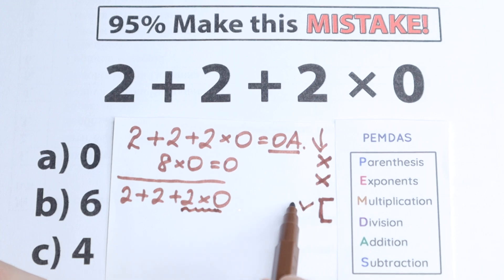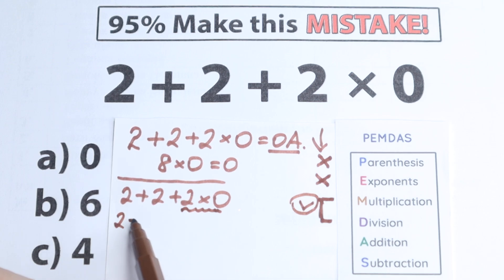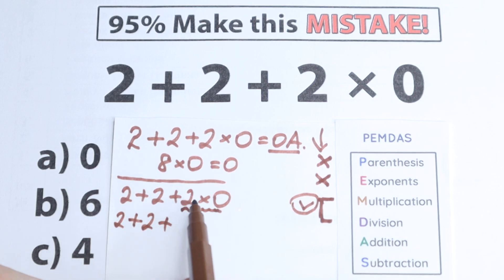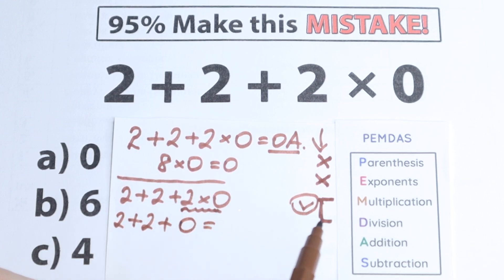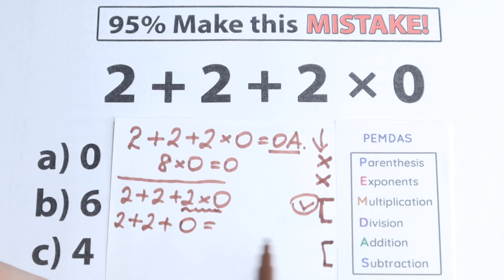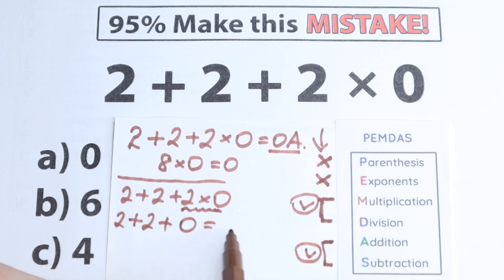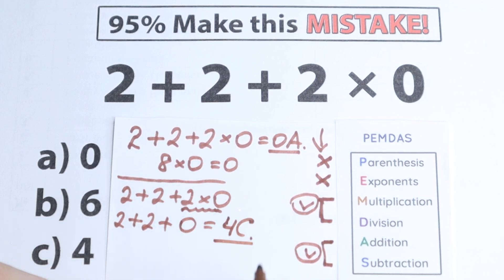So we need to start from this multiplication. We have 2 plus 2 plus 2 times 0. As I said, it doesn't matter what number you have — if you multiply by 0, the answer is 0. So 2 times 0 equals 0. Now the correct answer is not 0, because going to the last step — addition — we have 2 plus 2 plus 0, which equals 4.